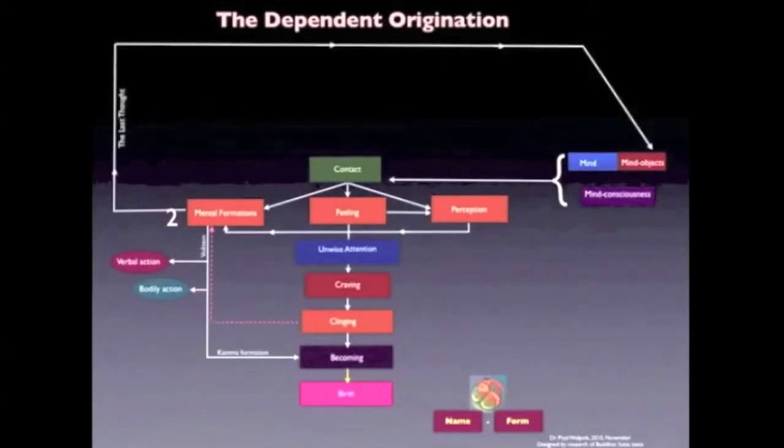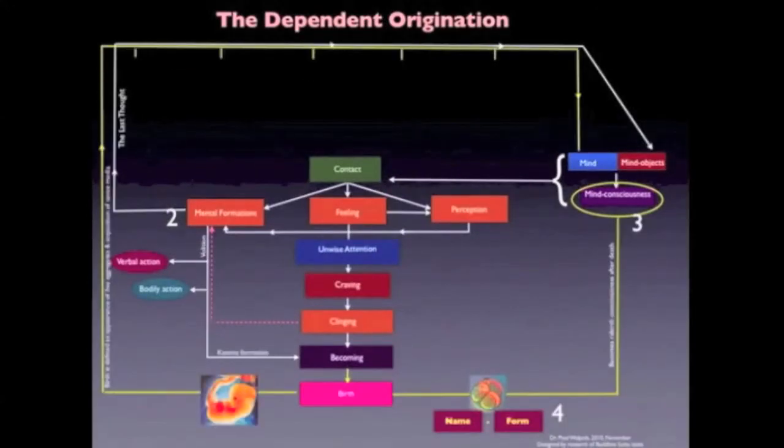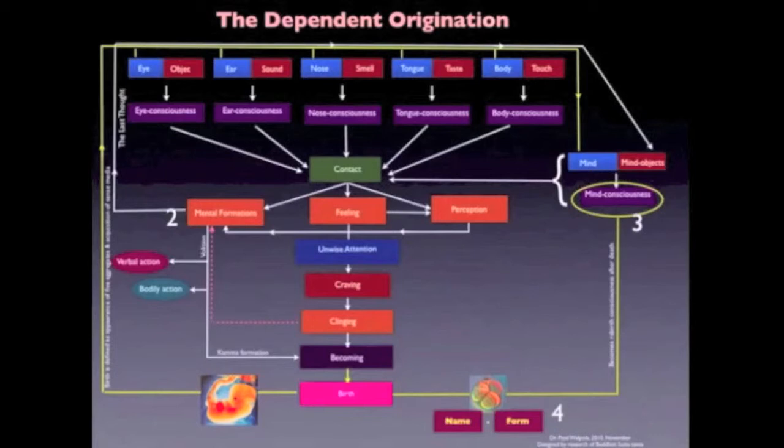Dependent origination holds that your last thought is embedded in mind consciousness. After conception, we have the arising of name and form. And at birth we have the hyperdevelopment of the six senses and their facilitator, contact.